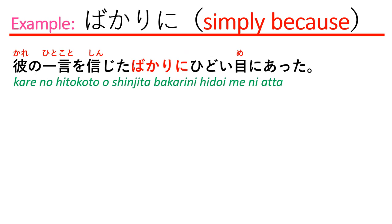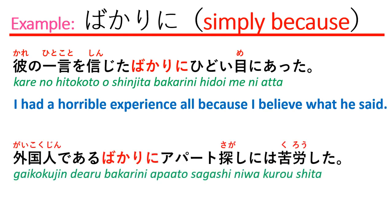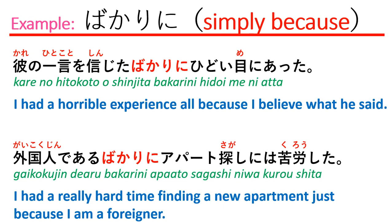Let's see the next examples: 彼の一言を信じたばかりに酷い目にあった。 Which means: I had a horrible experience because I believed what he said. And: 外国人であるばかりにアパート探しには苦労した。 Which means: I had a really hard time finding a new apartment just because I am a foreigner.